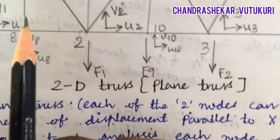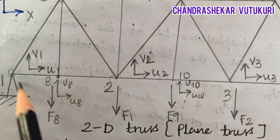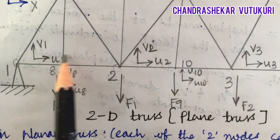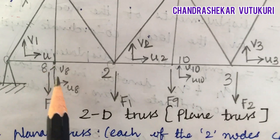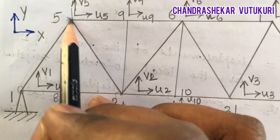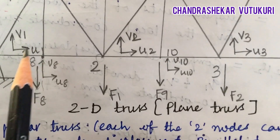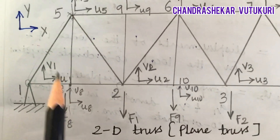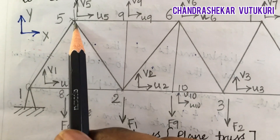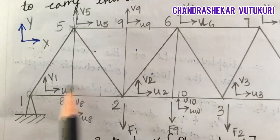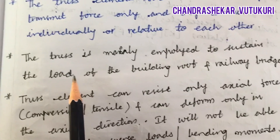This is a truss element. I consider this part — it is not going to move. It only transmits forces, but it is not going to move relative to each other. They are not going to move as they are fixed in such a way that with the help of bolts and rivets they are not going to move. They can transmit only the force.